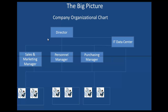We want to begin by looking at this company — a very small company. Here we have the director at the top, and then we have three managers in three different departments: sales and marketing, personnel, and purchasing. They all report to the director. And then we have the users, the employees who work within these separate departments, and they report to their managers, who in turn report to the director. And here on the side, we have the IT data center.